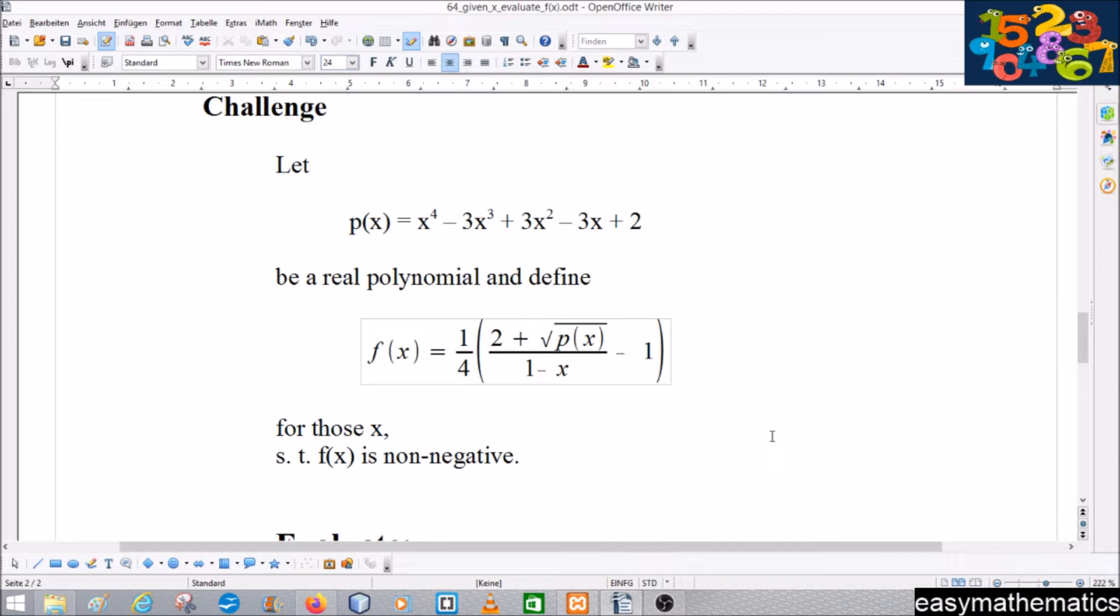squared minus 3x plus 2. Define f(x) as one-fourth times 2 plus the square root of p(x) over 1 minus x, minus 1.